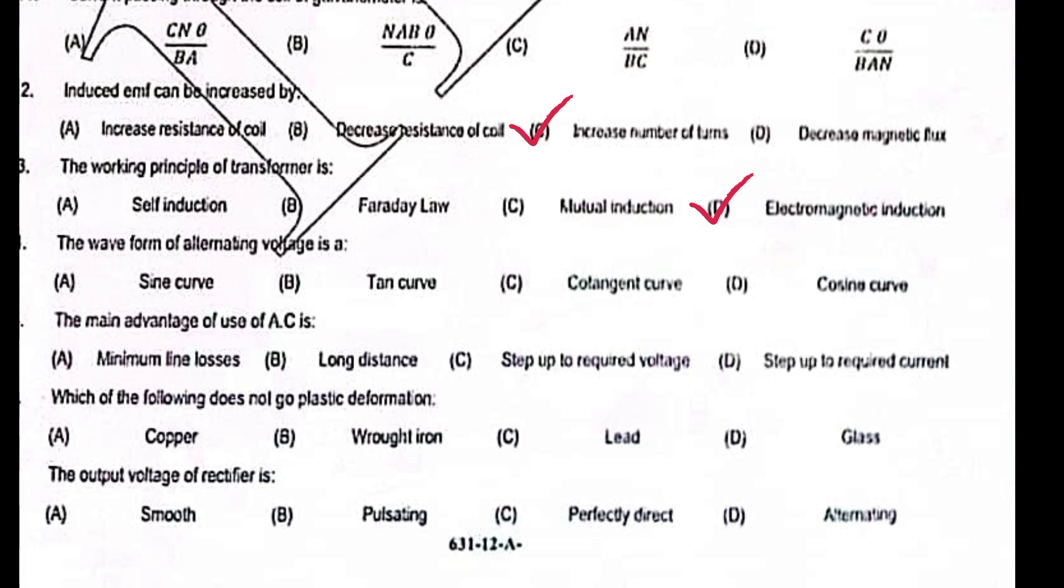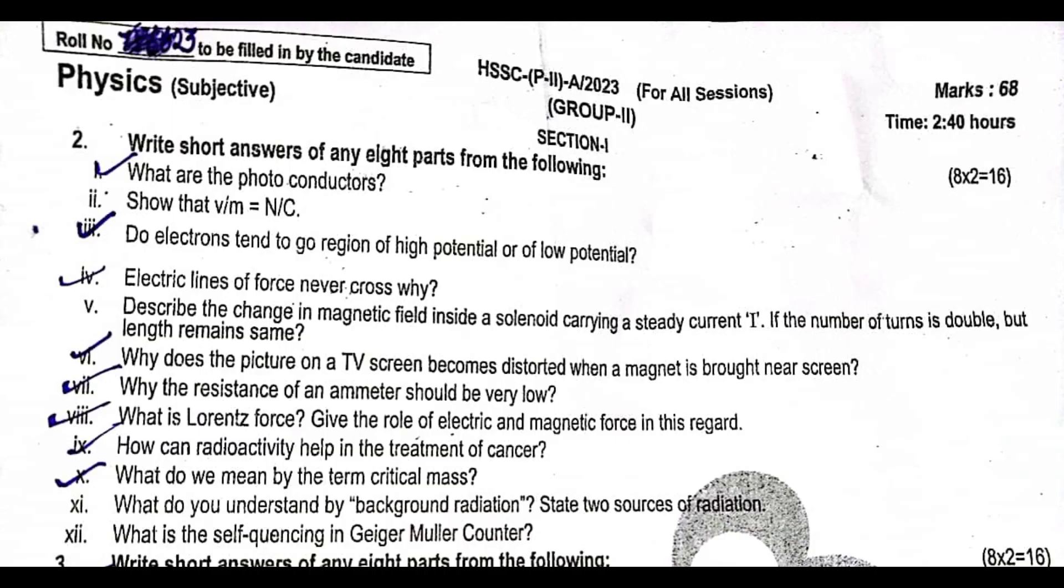The waveform of alternating voltage is a sine curve. The main advantage of use of AC is step up to required voltage. Which of the following does not go plastic deformation? Option B. The output voltage of rectifier is pulsating.